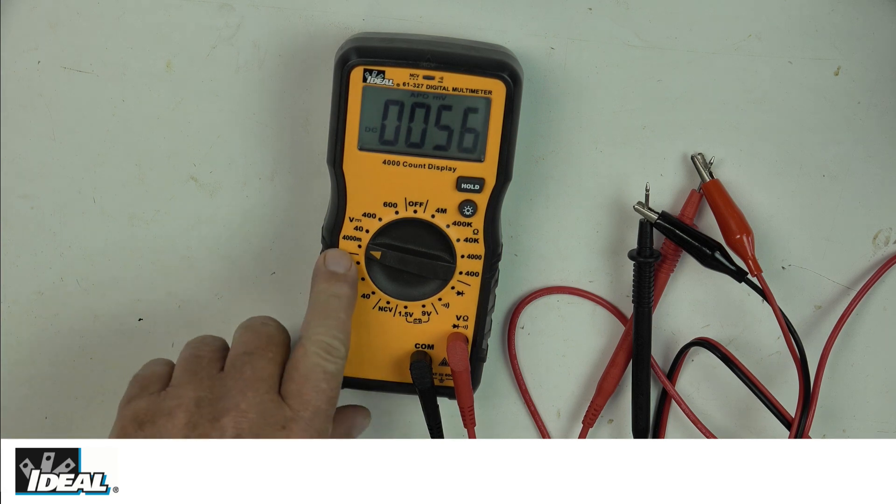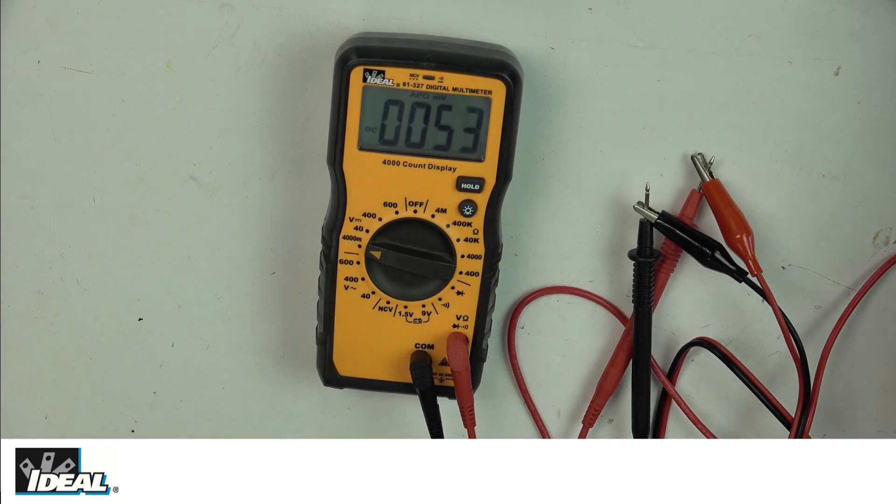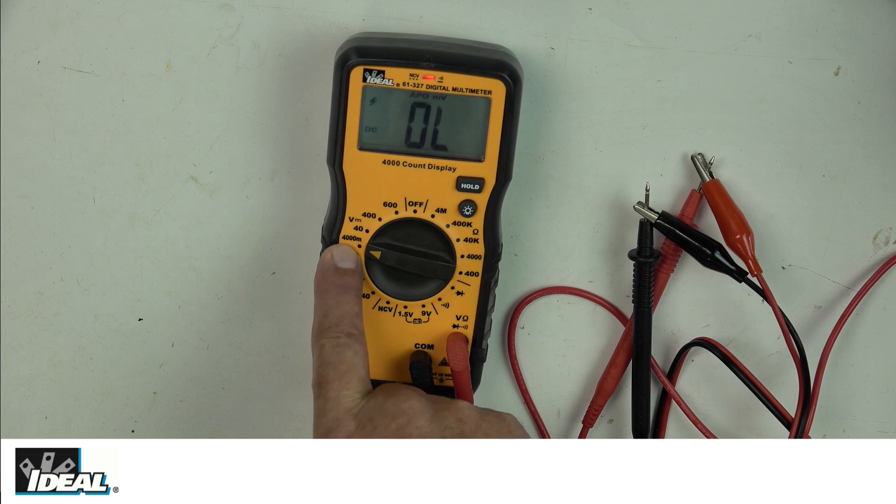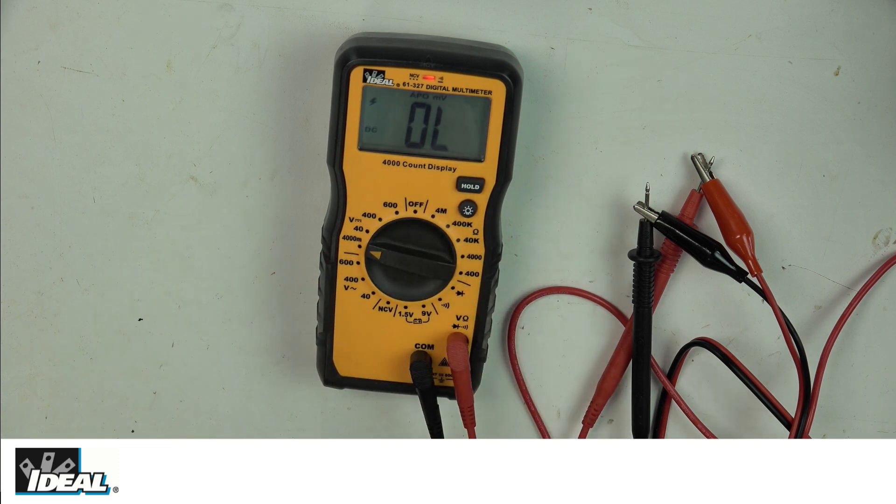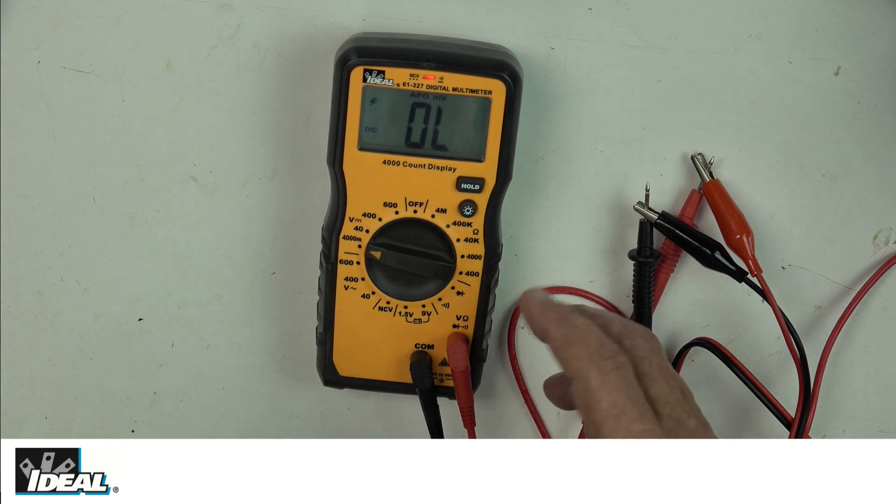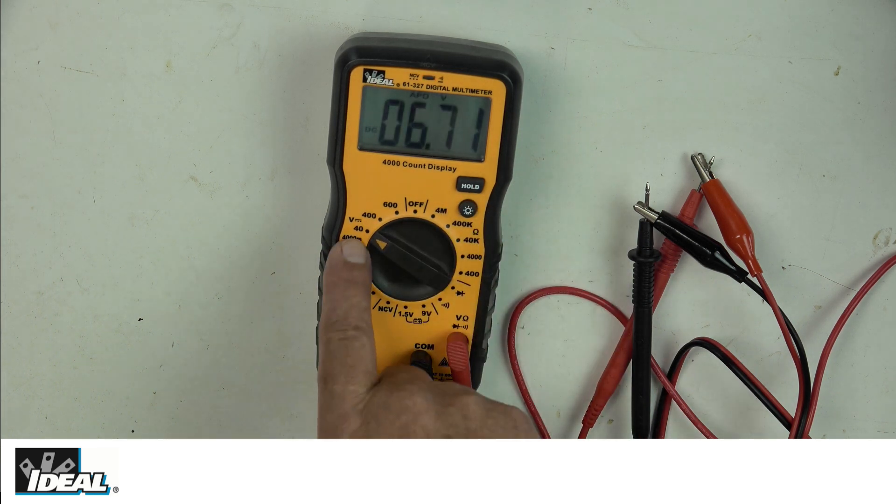The resolution here is at 4000 millivolts. As we crank up the power supply and get just past 4000 millivolts, we get OL or over limit in the display. That means we need to turn the range up on the tester to 40 volts.